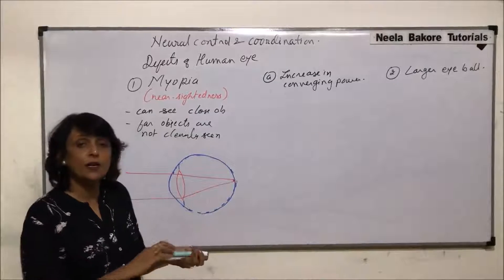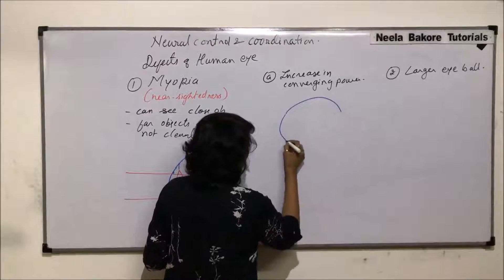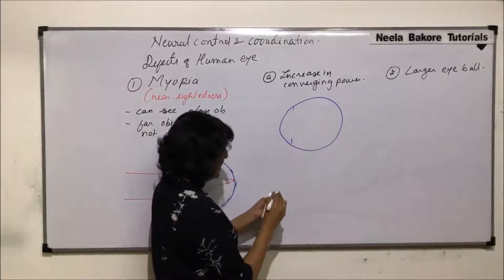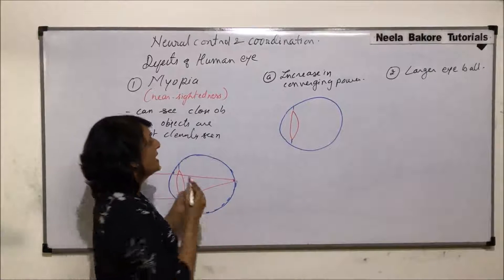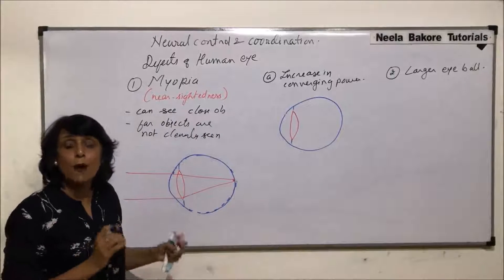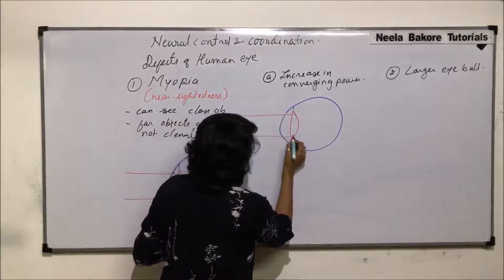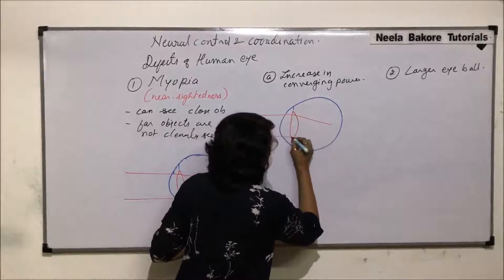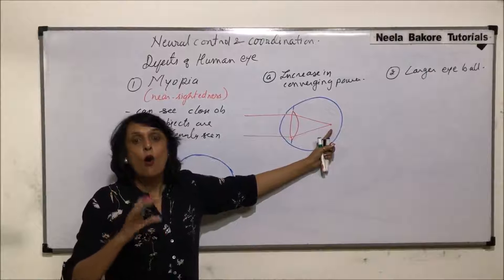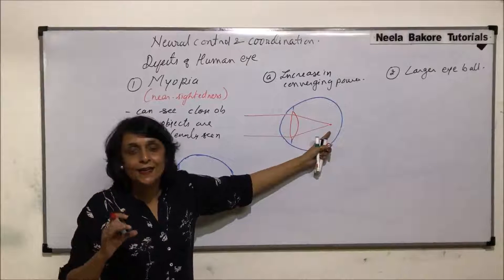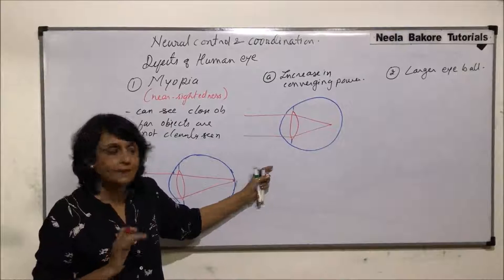For the first problem: here is the normal eye with a slight bulge of the cornea, and the lens is suspended with suspensory ligaments. The power of the lens has increased — increased converging power. So when rays fall on it, because of the increased convergence, the rays converge in front of the retina. The image is formed in front of the retina, so the image will be blurred.